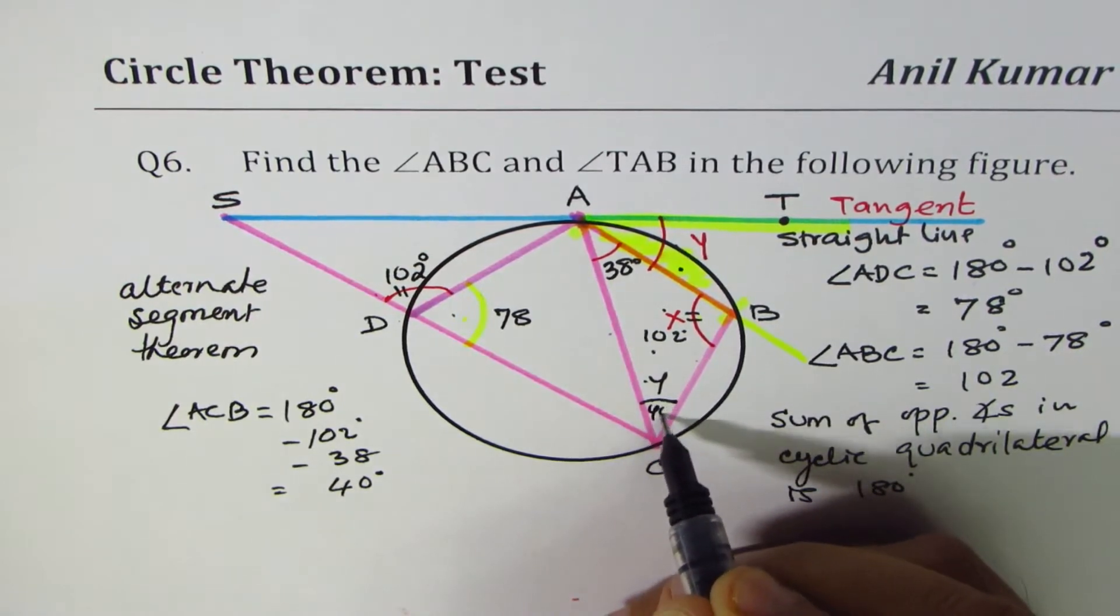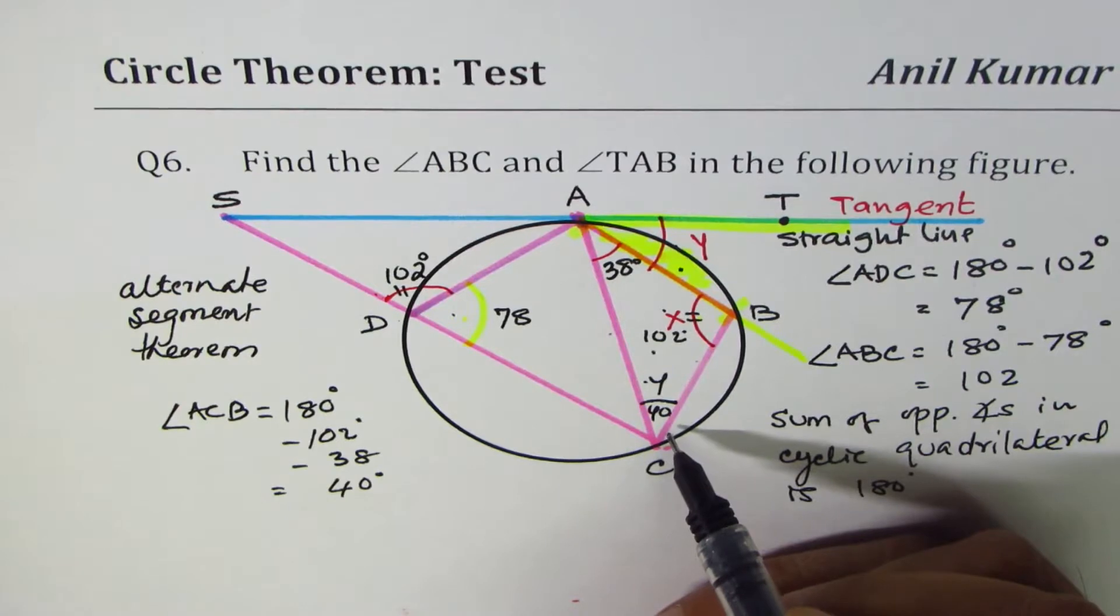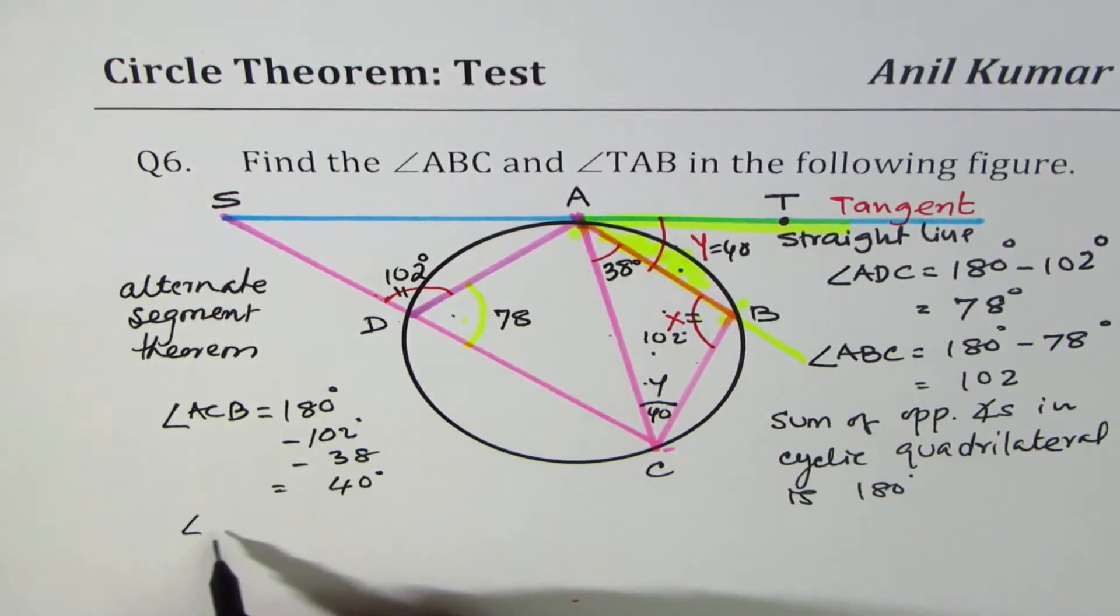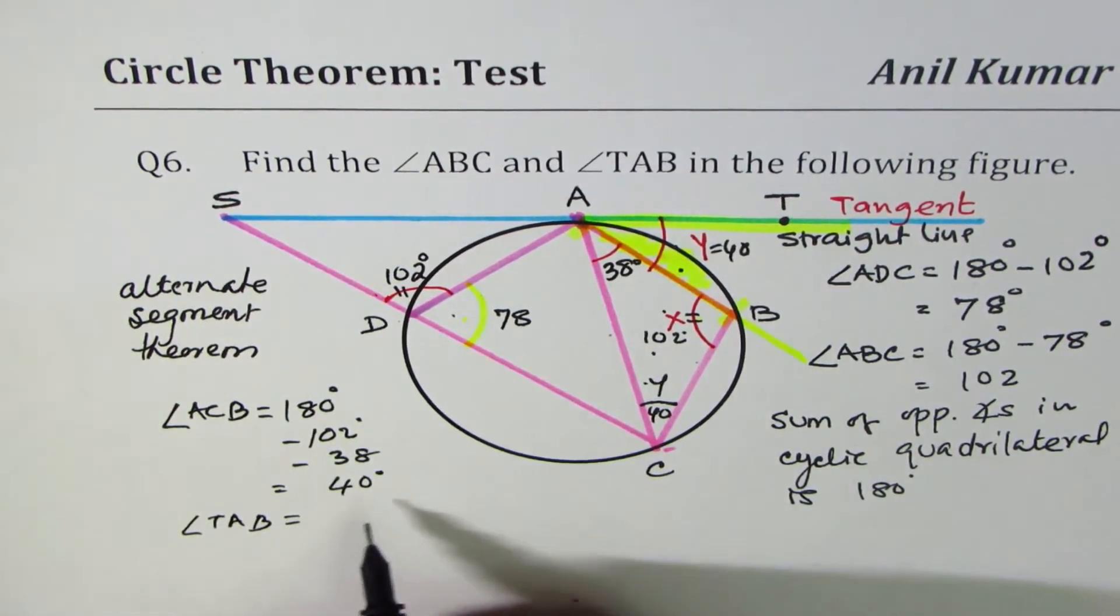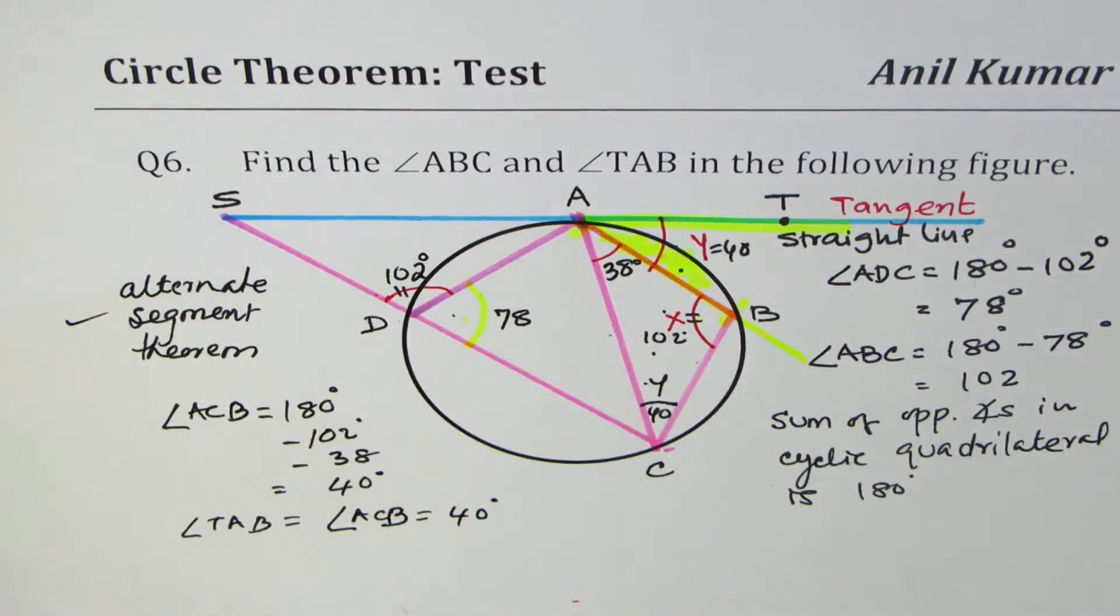So, if you add these, it becomes 180. So, Y is equal to 40 degrees. So, angle TAB is equal to angle ACB, and that is equal to 40 degrees, based on alternate segment theorem.